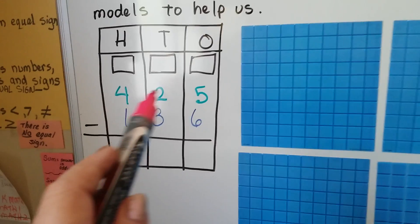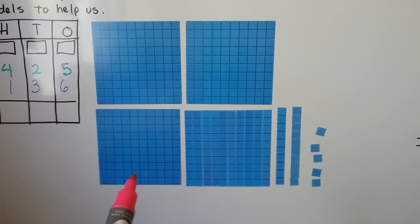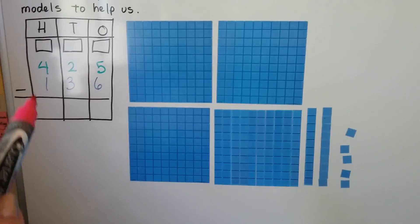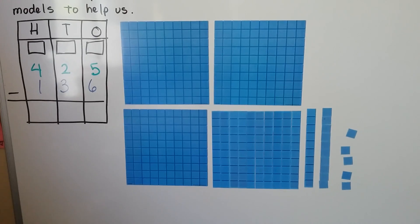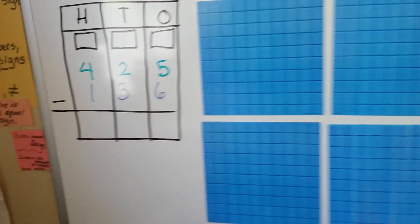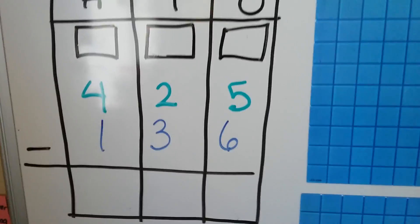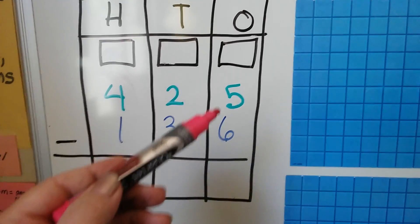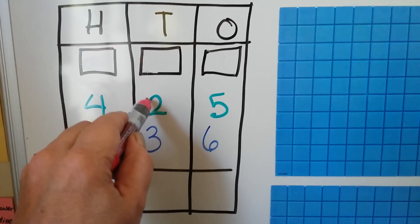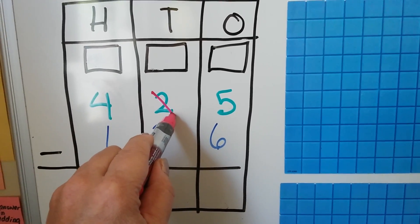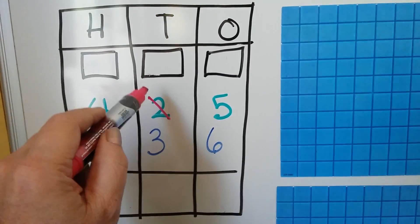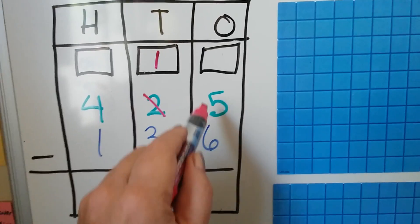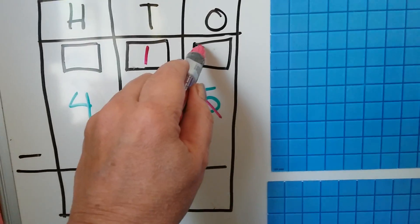So 425 — we have four hundreds, we have two tens, and we have five ones. We need to take away 136. What we need to do is take six from the five, but we can't — the five isn't big enough. So what we're going to do is regroup the two as a one, and give that ten to the ones place. So this is not a five anymore, it's a 15.